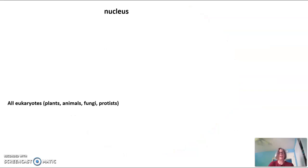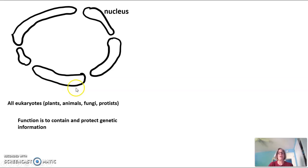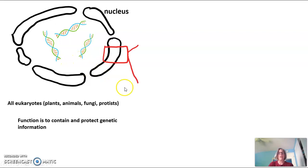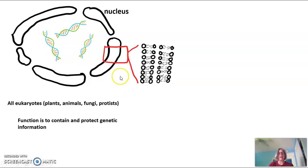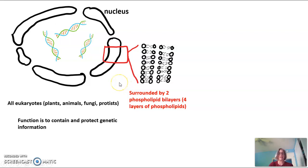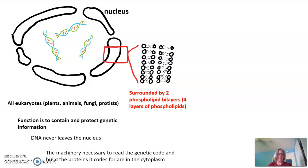This whole process starts in the nucleus. The nucleus is found in all eukaryotes — plants, animals, fungi, and protists — and its function is to contain and protect the genetic information. The nuclear membrane is actually a double membrane bilayer, with two bilayers making for a total of four layers of phospholipids. The DNA inside the nucleus never leaves; it's too valuable and has to stay protected inside.